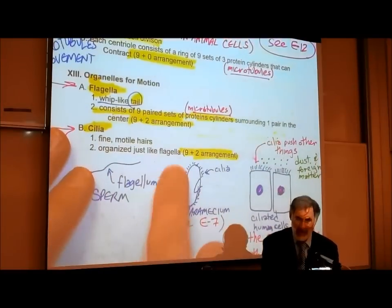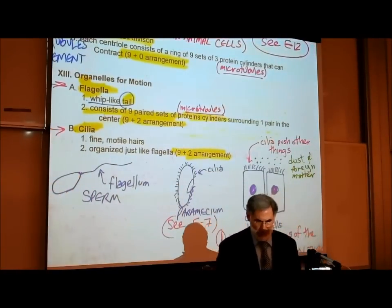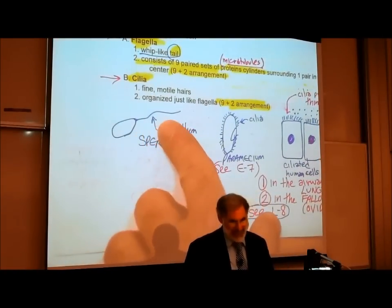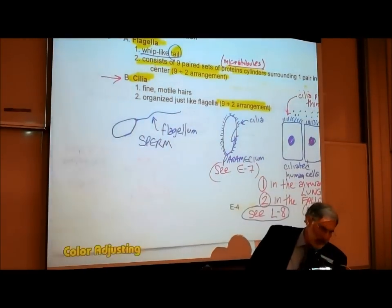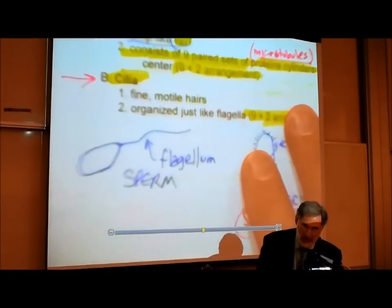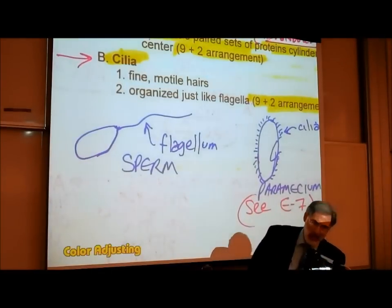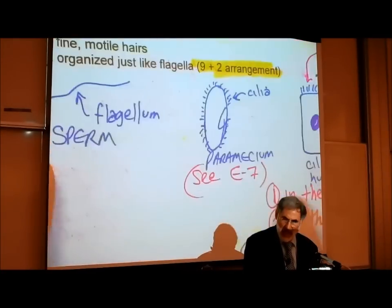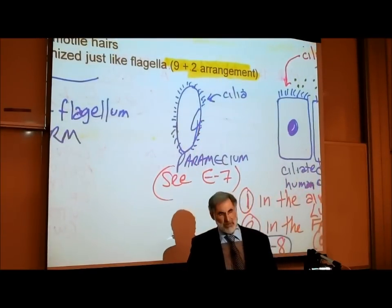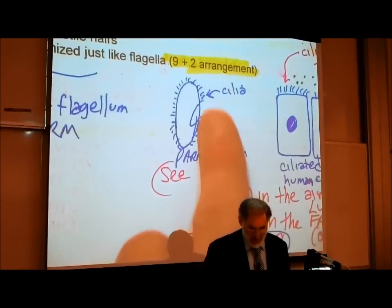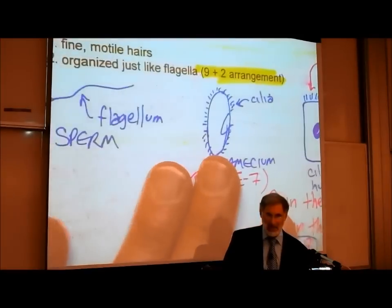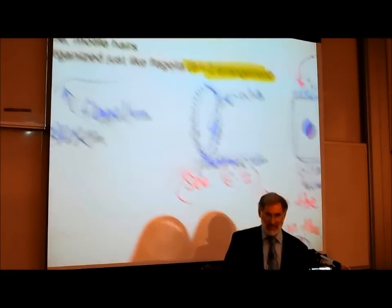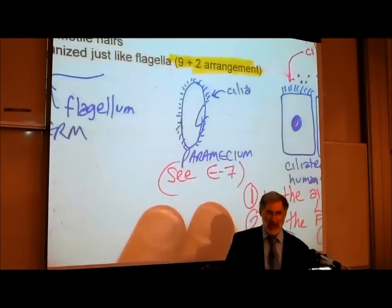Cilia are fine motile hairs organized just like a flagellum. A flagellum is a tail — an example of a flagellated cell is human sperm, where the flagellum acts like a tail that moves, propelling the sperm through a fluid environment. A paramecium is a single-celled protozoan that has little cilia — cilia are like short flagella. Both flagella and cilia are associated with movement.